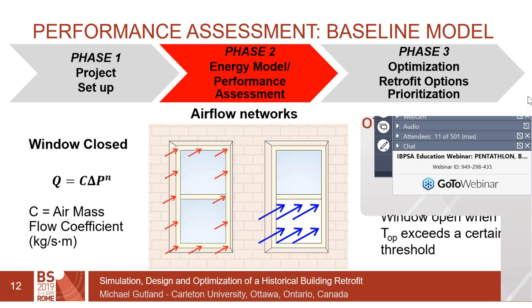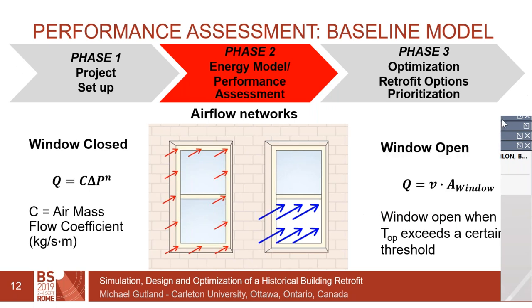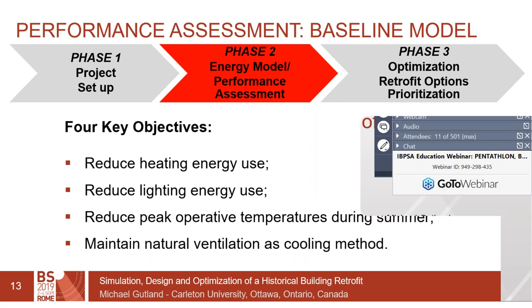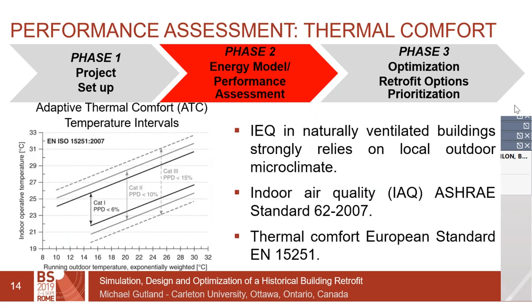We chose three to six air changes per hour as appropriate for a building of this age and construction. Based on this, we identified four key objectives: number one, reduce heating energy use; number two, reduce lighting energy use; number three, reduce peak operative temperatures during summer; and number four, maintain natural ventilation as a cooling method rather than introduce a mechanical system. We used operative temperature as the basis for all occupant comfort assessment.